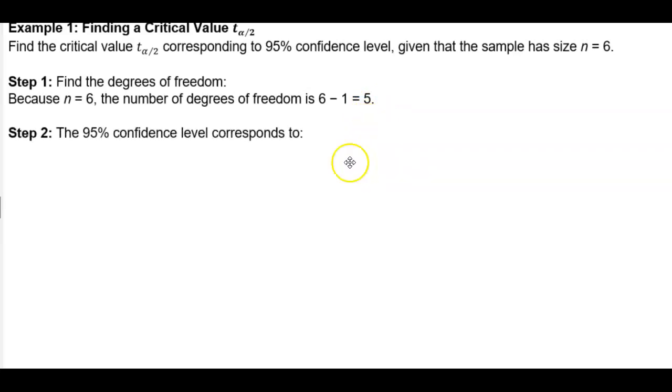Step 2: The 95% confidence level corresponds to the following. We have to first find alpha, and alpha is equal to 1 minus the 95%, which is 0.95. So 1 minus 0.95 gives us 0.05.